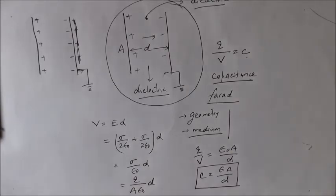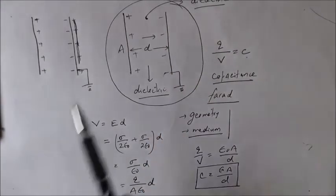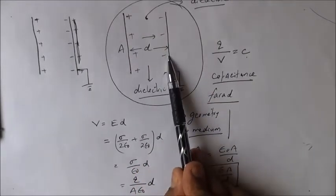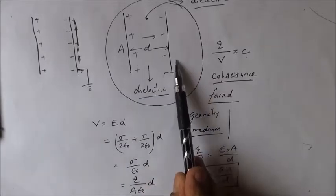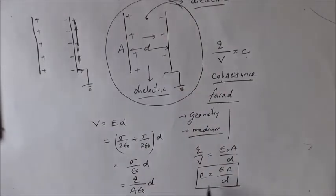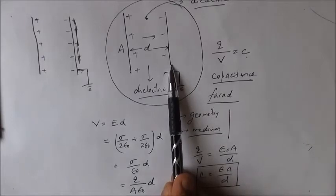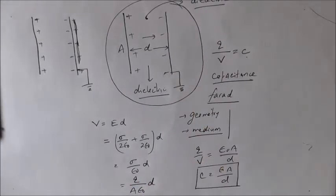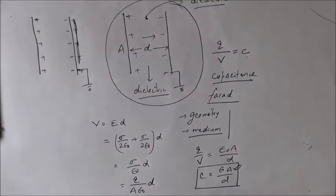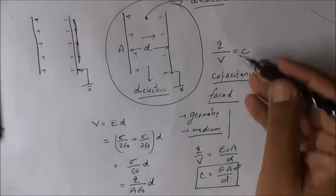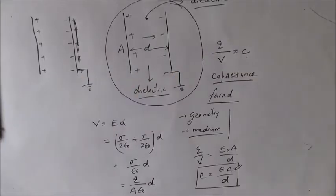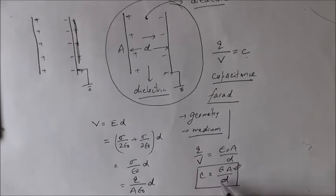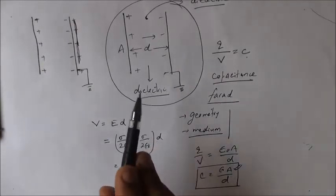So Q/V, which is also C, becomes ε₀A/d. This is the capacitance of a plane parallel plate capacitor — two parallel plates each with area A and separation d. The field is uniform because we have taken large plates with small separation between them. The purpose of the grounded plate is to reduce the potential difference and electric field, making the external field zero. More area means bigger plates, bigger plates means more capacity and we can store more charge. More separation means less capacity; less separation means more capacity.